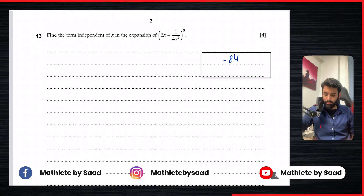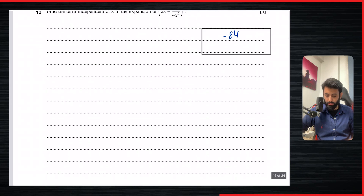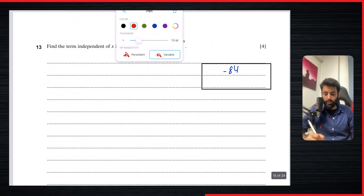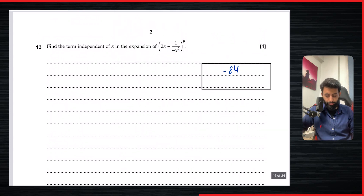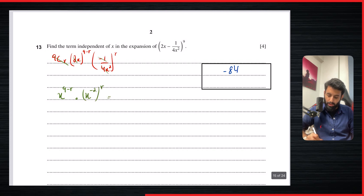Here's another question from October/November 2017, Paper 12. It says: find the term independent of x in the expansion of (2x − 1/(4x²))^9. We use the general term: 9Cr · (2x)^(9−r) · (−1/(4x²))^r. We ignore everything that does not involve x — so 9Cr, 2, −1, and 4. 'Independent of x' means we set the x part equal to x^0.